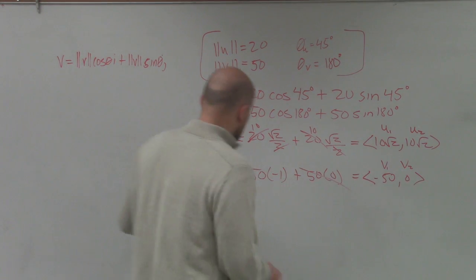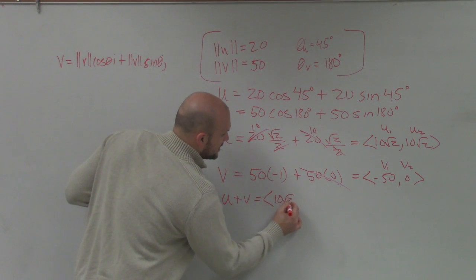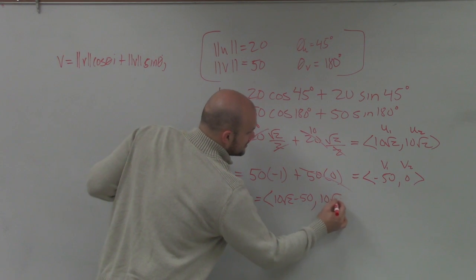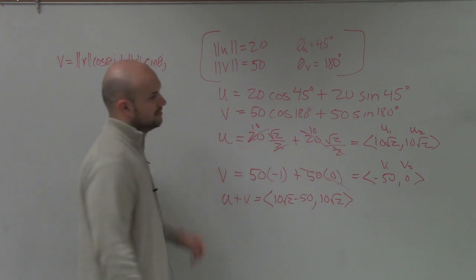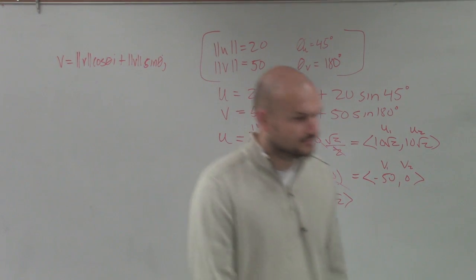So therefore, in my answer here, my answer is simply going to be 10 square root of 2 minus 50, comma, 10 square root of 2. Because you just add those two points up. And that's it.